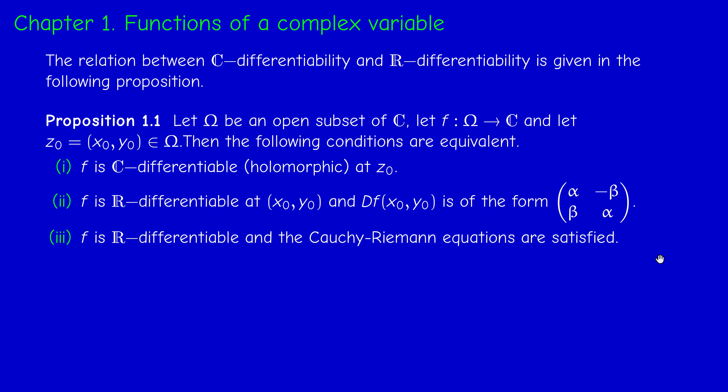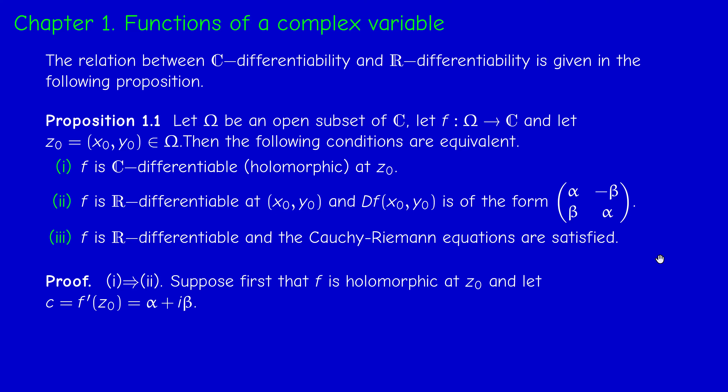The proof is not difficult. Suppose F is C-differentiable and let c = F'(Z₀) = α + iβ. Going back to the definition, F(Z₀ + H) − F(Z₀) − cH is a small-o of H. Writing H as both a complex number H₁ + iH₂ and as a vector (H₁, H₂), and replacing c by α + iβ, the linear term cH gives components αH₁ − βH₂ and βH₁ + αH₂.